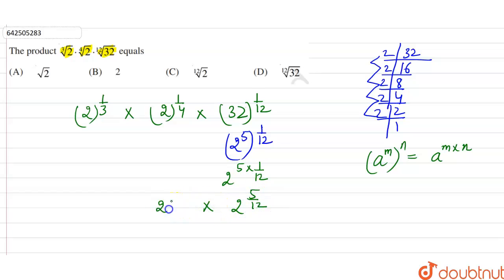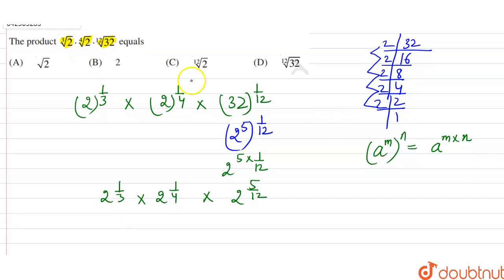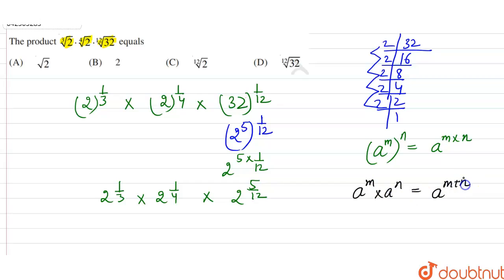Now we have to find the product of 2 raised to the power 1 by 4, into 2 raised to the power 1 by 3, into 2 raised to the power 5 by 12. When bases are the same, the powers get added.